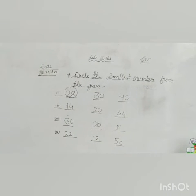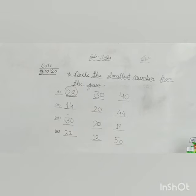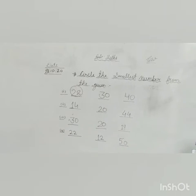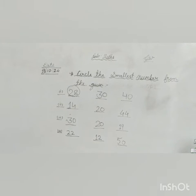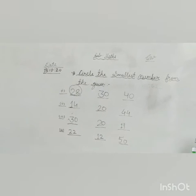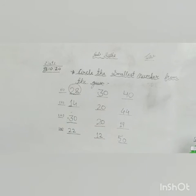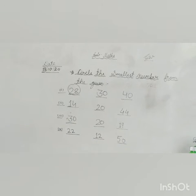Next is 14, 20 and 44. So, tell me kids, which number is smaller here? Yes, 14 is the smallest number. Sab se chota kya hai? 14. 44 sab se bada. Usse small, 20. 20 se small, 14. So, circle on the number 14.